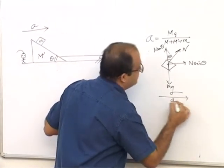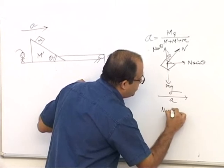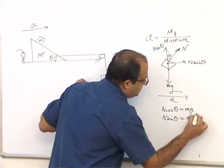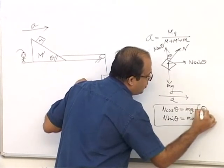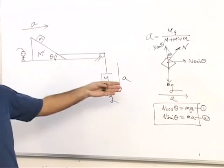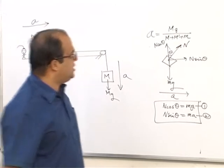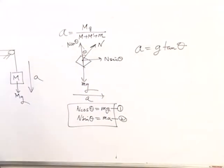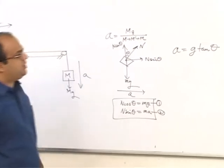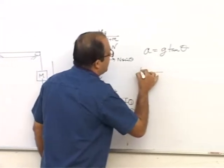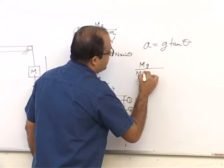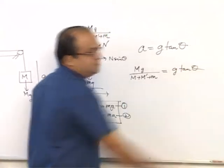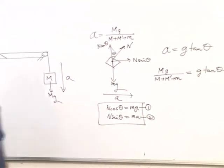Acceleration is in this direction. So N cos theta becomes equal to mg. And N sin theta becomes equal to ma. Exactly like the equations we have got earlier. Equation 1 and equation 2. You divide 2 by 1. And again we get tan theta equal to a upon g. So a will become g tan theta. This acceleration and this acceleration must be equal. Therefore Mg by M plus M dash plus small m is equal to g tan theta. Right?